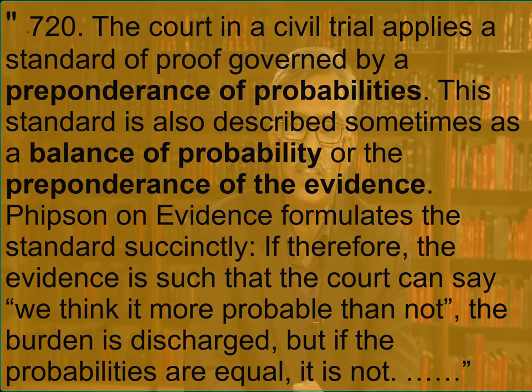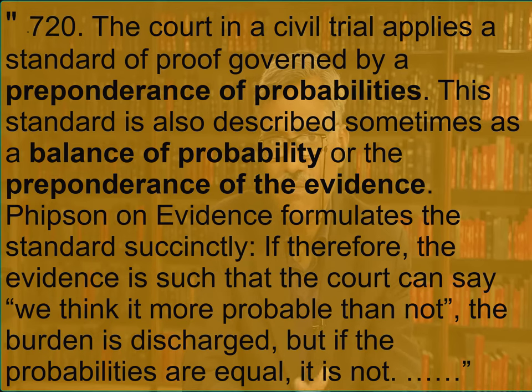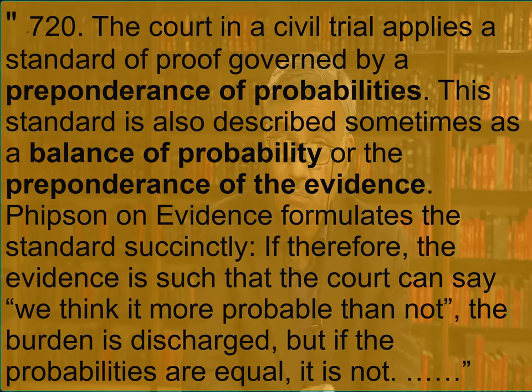The court held in para 720 that the court in a civil trial applies a standard of proof governed by a preponderance of probabilities — also described as balance of probabilities or preponderance of the evidence. Citing Phipson on Evidence, the court formulated the standard succinctly: 'If the evidence is such that the court can say we think it more probable than not, the burden is discharged; but if the probabilities are equal, the burden is not discharged.' It must be remembered that although the level of proof in departmental cases is preponderance of probabilities, there should be some evidence, and no conclusion should be drawn on mere suspicion, however strong, or on conjectures or surmises.